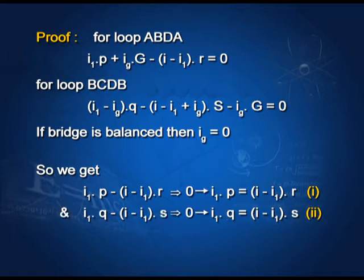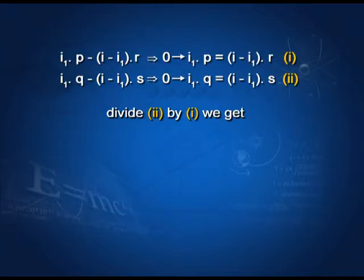And I1·Q = (I − I1)·S — equation number 2. Dividing equation 2 by equation 1, we get P/Q = R/S, which is the balanced condition of the Wheatstone bridge.